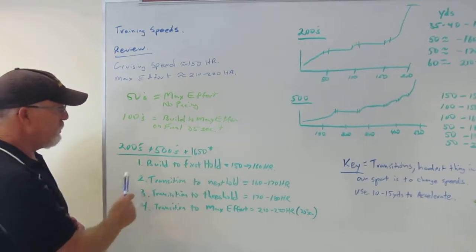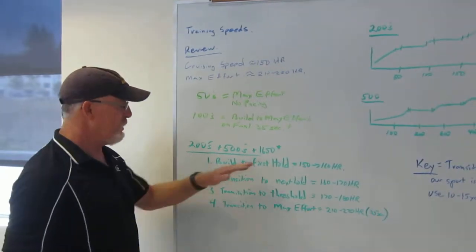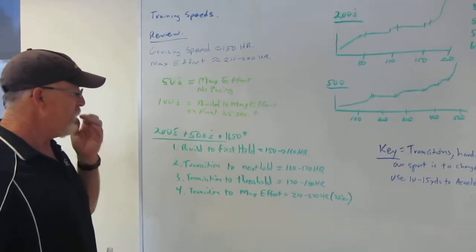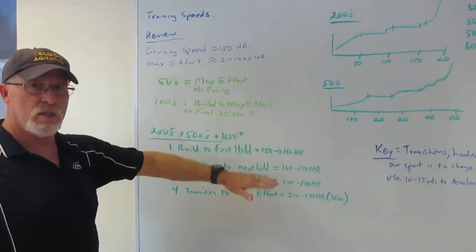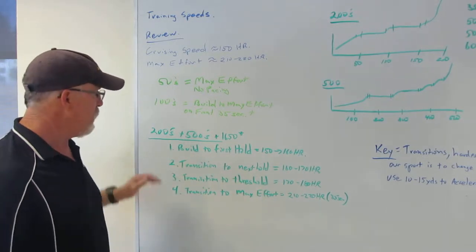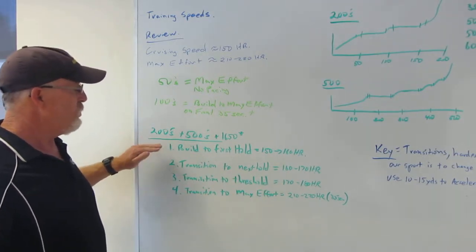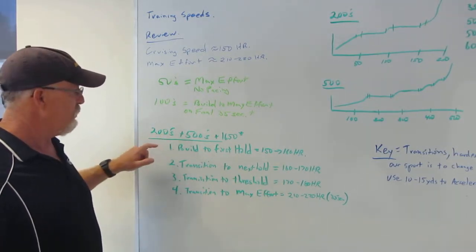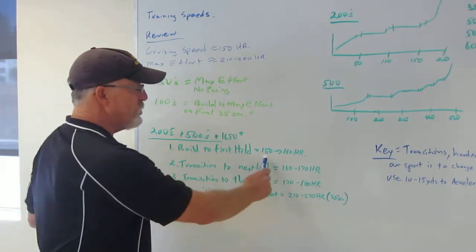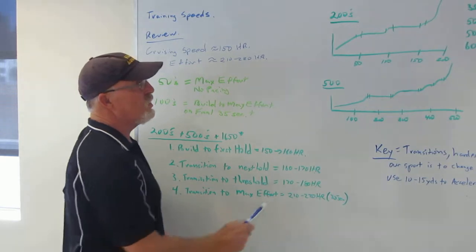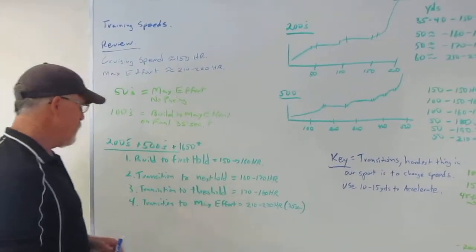So I want to talk a little bit more about 200s, 500s, and a little bit about the 1650. And in these events, we're looking at different training speeds with corresponding heart rates. So when you are swimming these middle distance events, you build to your first hold. You start out maybe 150 to 160 heart rate. And in the 200, you can kind of see the graph again.